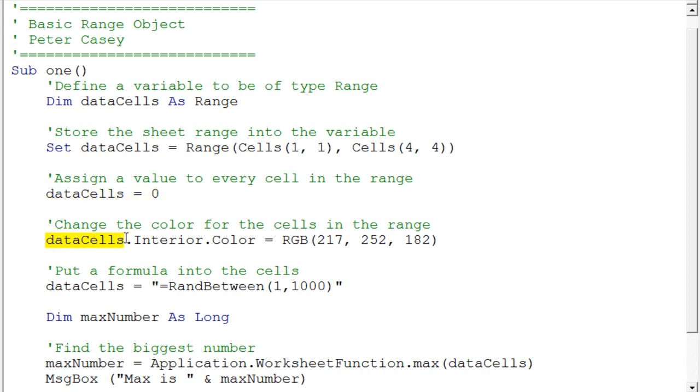And then again notice on this next statement, we're going to take that same range and we're going to set the interior color to an RGB color. This is kind of a light green color. And finally in this particular example you'll see I'm actually putting a formula into those cells. It's the ran between formula that will put a random number between one and a thousand.